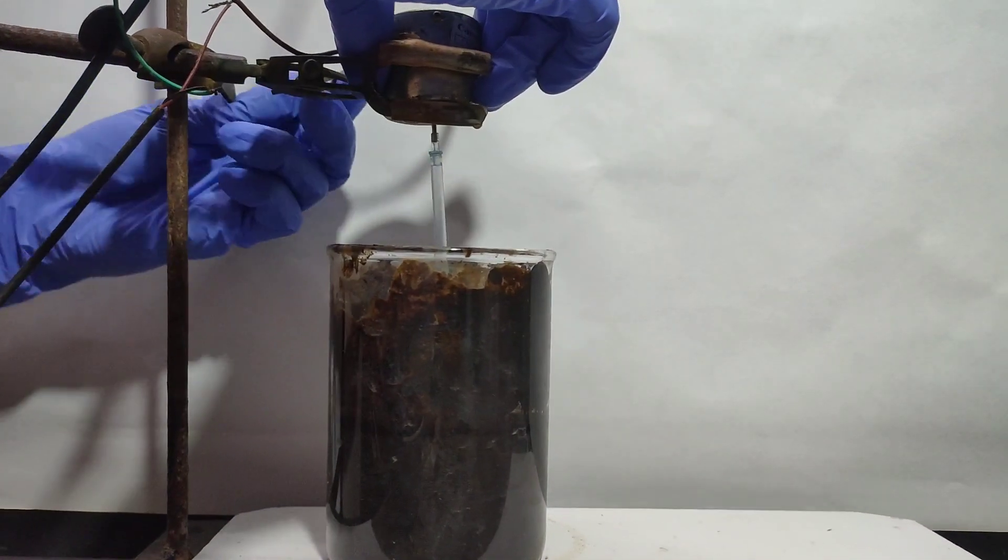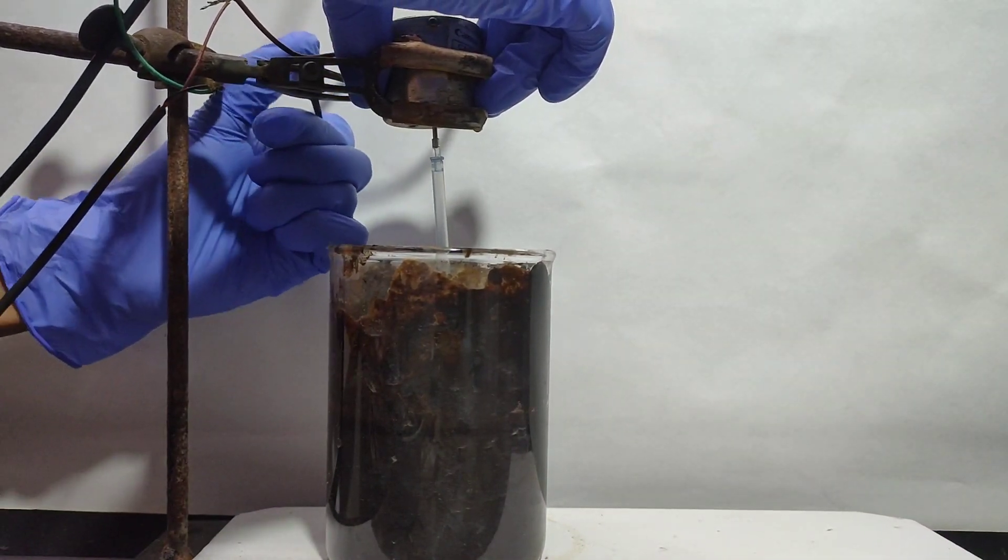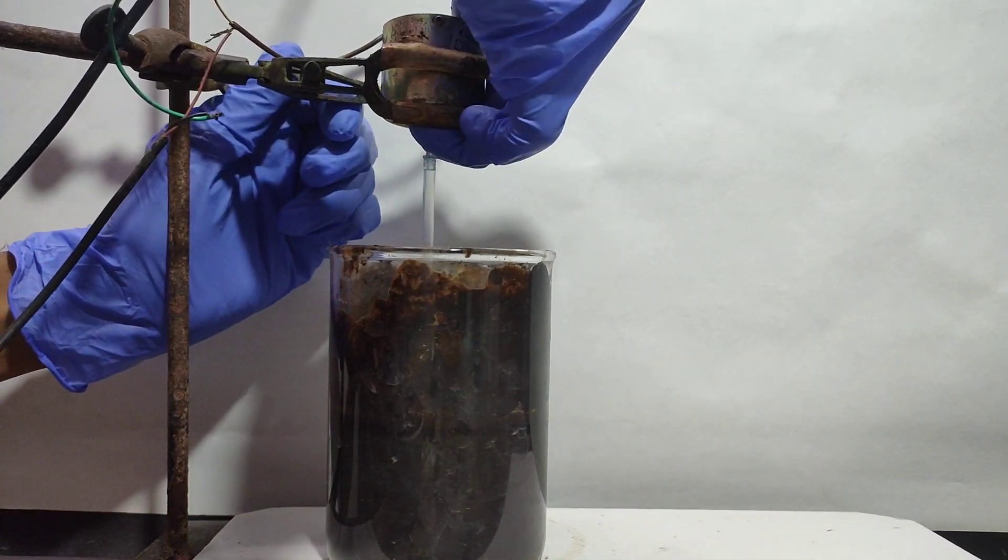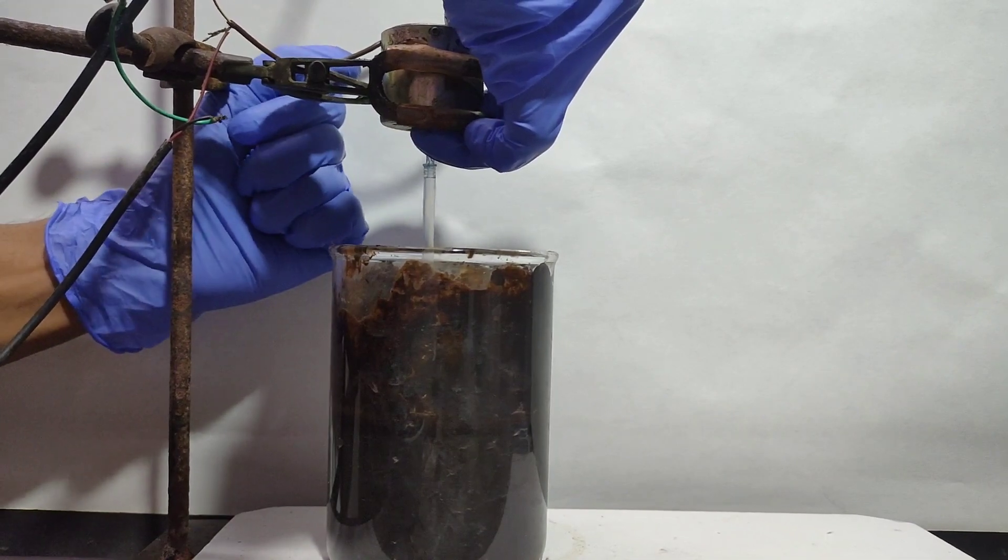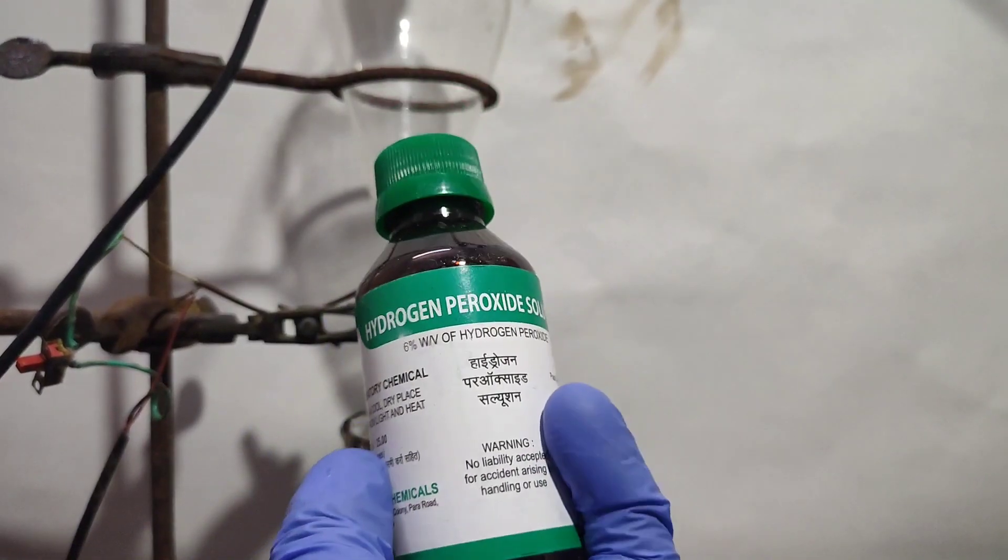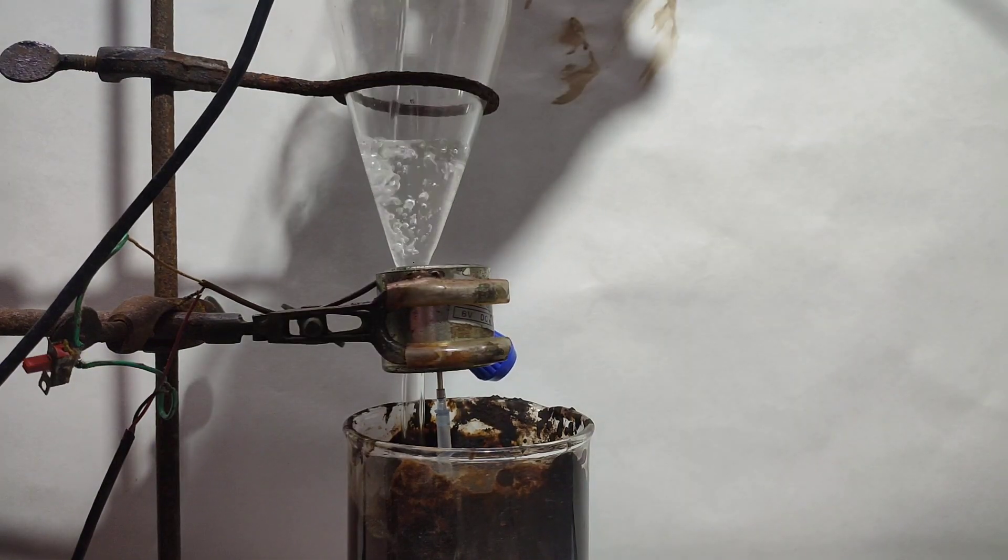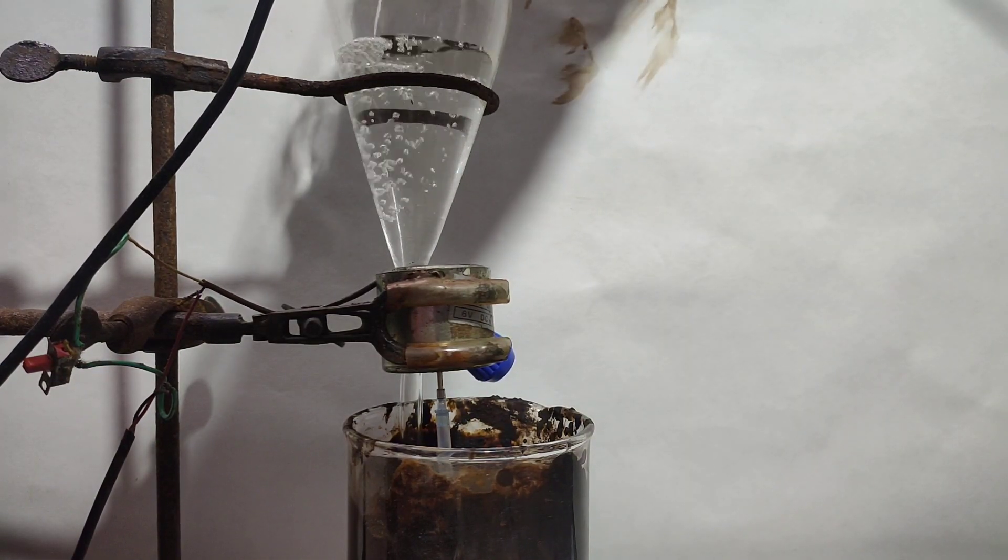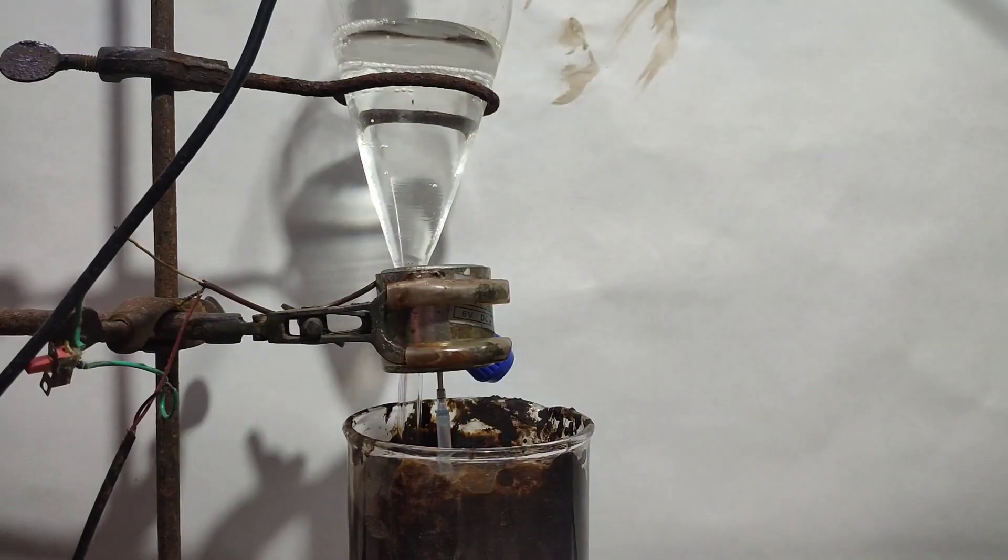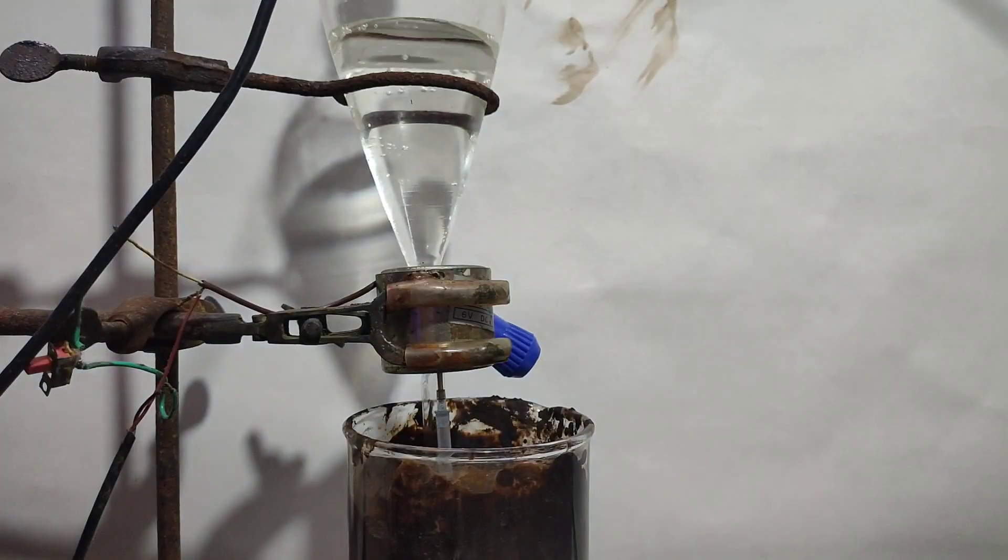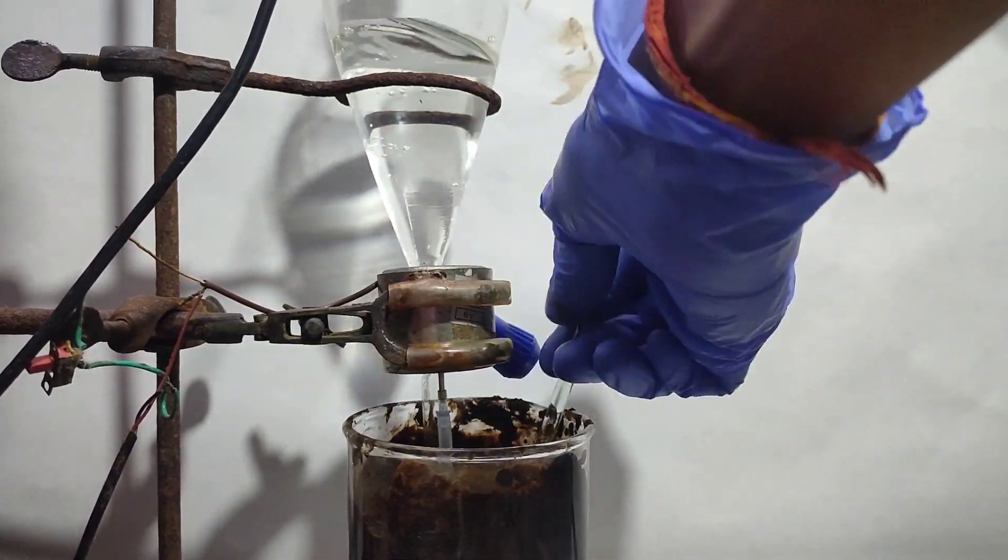I attached a stirrer to stir this slurry, but it wasn't effective as the slurry was thick and viscous. Manual stirring was required. Then I placed 100 ml 6% hydrogen peroxide in a separating funnel and added it to the slurry dropwise with constant stirring. First I manually stirred the mixture.